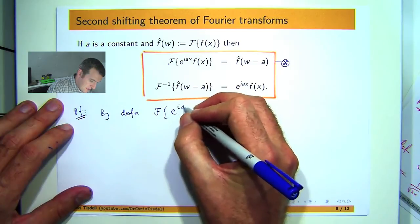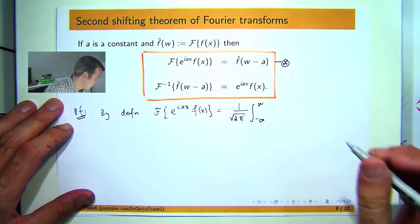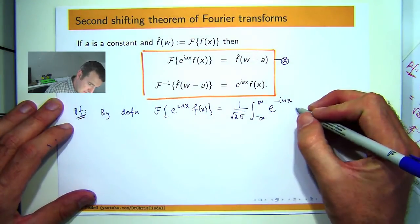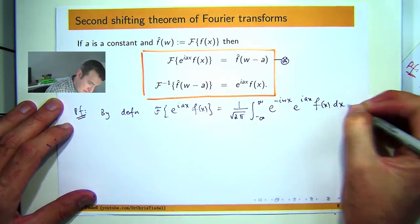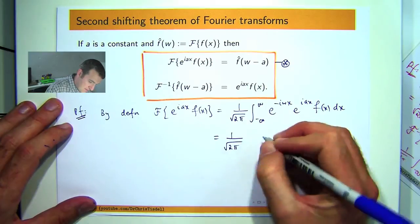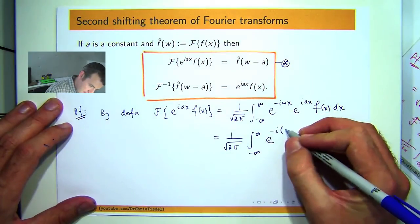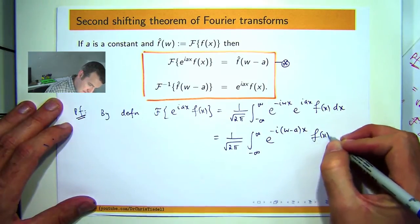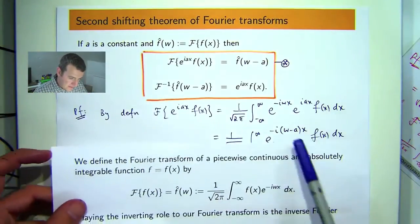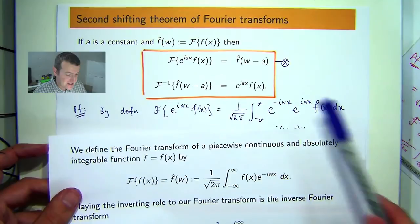So by definition, the transform of this product is just the following. So that's my so-called kernel, I multiply it by what's in here. Now if you look at this, you can actually combine those and you'll notice that there's a shift now. So what is this? Well, it's almost this, but instead of w, I've got w minus a in brackets. So that is actually just, it's not f hat of w, it's f hat of w minus a. So it's the right hand side here.